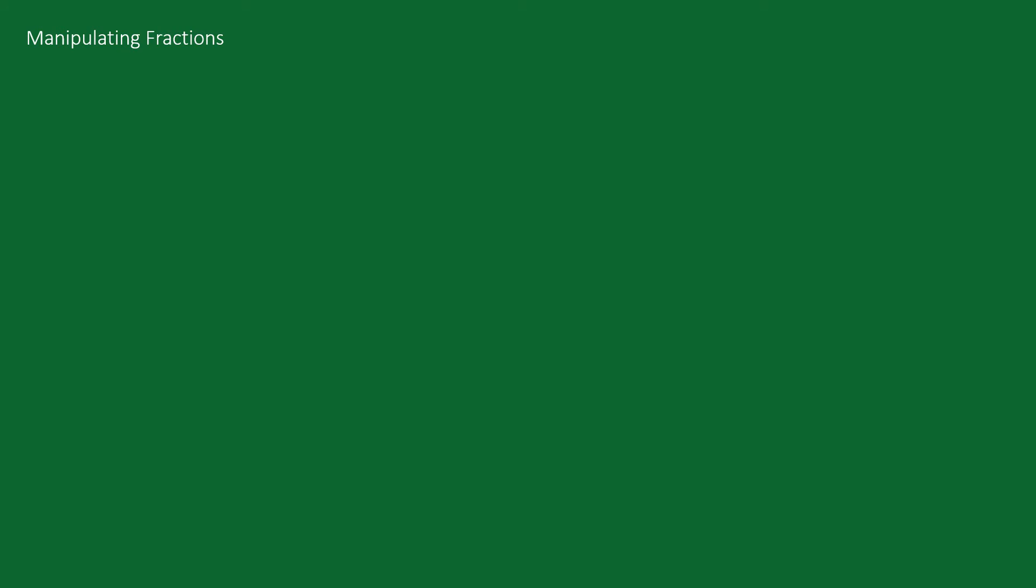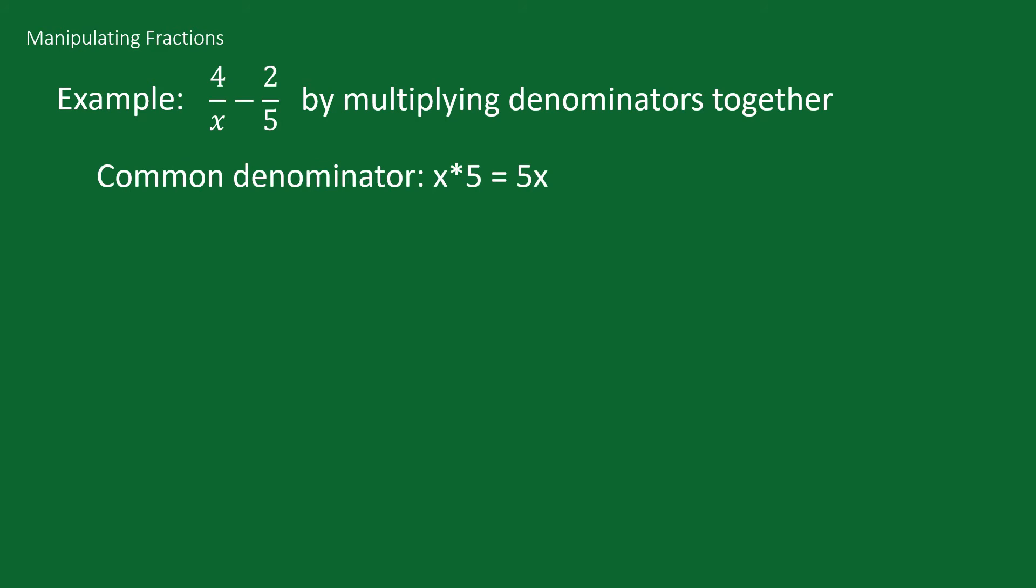Now what if we weren't sure what the denominator is? For example if we had 4 over x minus 2 over 5. We would do the exact same method as before, we just can't simplify quite as much. Our common denominator is going to be 5x since we just multiply the denominators together. Then 4 over x times 5 over 5 plus 2 over 5 times x over x equals 20 over 5x plus 2x over 5x, and that gives us 20 plus 2x over 5x, and that's going to be our answer since we can't simplify anymore.